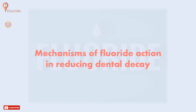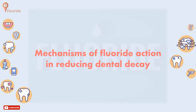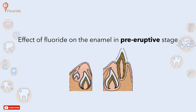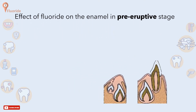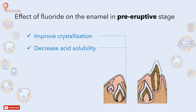We are going to talk about mechanisms of fluoride action in reducing tooth decay, commencing with the effects of fluoride on enamel at the pre-eruptive stage. It helps to improve crystallinity and increase crystal size, decreases acid solubility, and aids in forming more rounded cusps and fissure pattern, but the effect is small. Discontinuation of systemic fluoride results in an increase in caries.